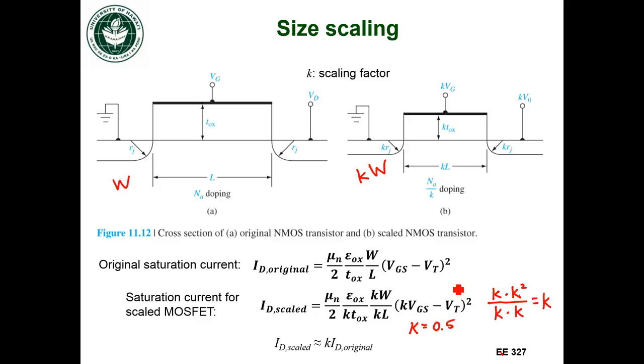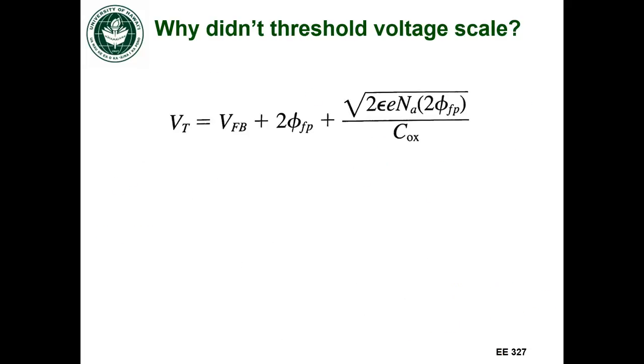On a side note, how come the threshold voltage doesn't scale? So if we look at the threshold voltage equation, this is what it looks like. Now these first two terms, these are functions of doping, but they're very slight functions of doping. So we can say that these two are not changing when we scale the transistor.